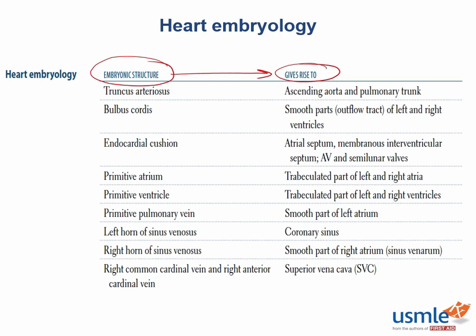Well, if you know that the endocardial cushions did not form correctly, then you would know where to look for the defect. And in this case, it would be the atrial septum, the membranous intraventricular septum, the AV, and the semilunar valves.